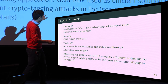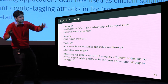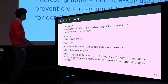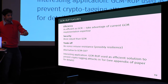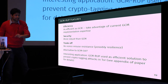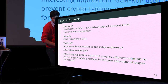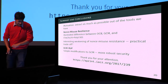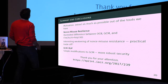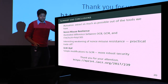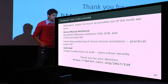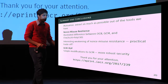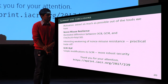In the paper's appendix, there is also an interesting application: GCM-RUB can provide a very efficient solution to prevent tagging attacks in Tor, which are attacks on anonymity. To summarize: our motivation was to extract as much as possible out of already-deployed tools. We introduced nonce-misuse resilience as a formal notion and the GCM-RUB construction.